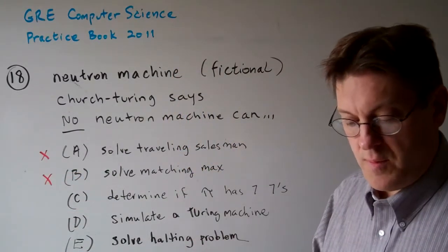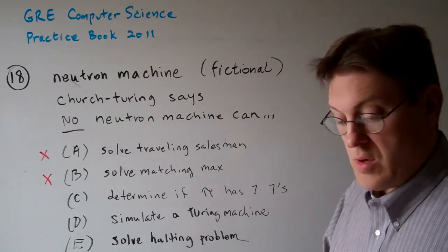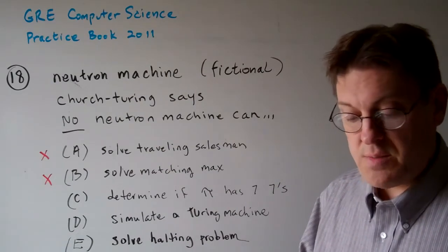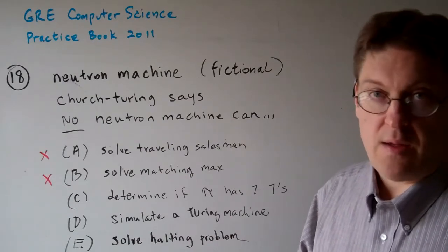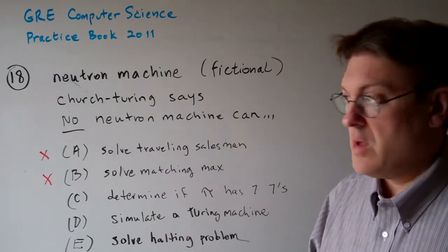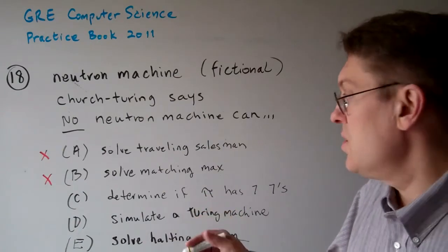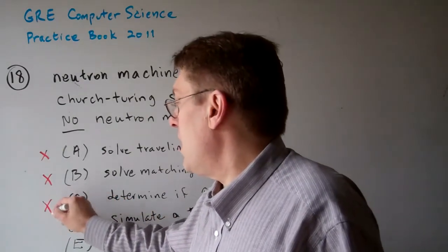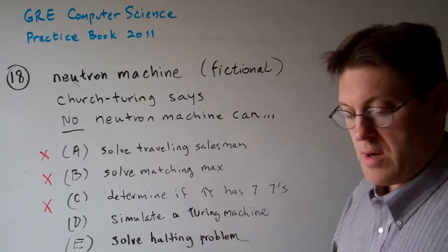Option C: No neutron machine can determine whether the decimal expansion of pi has seven consecutive sevens. Again, unproven issue. We do not know if it can do it or not. It's not a consequence of Church-Turing.